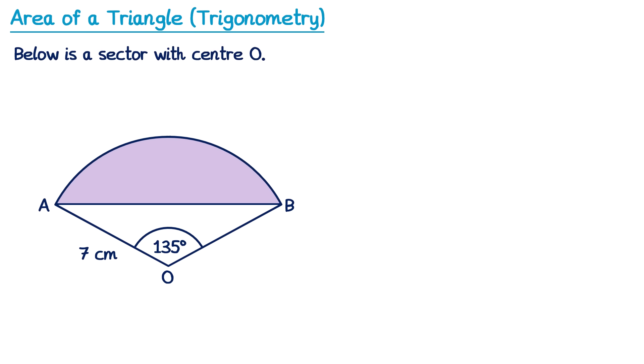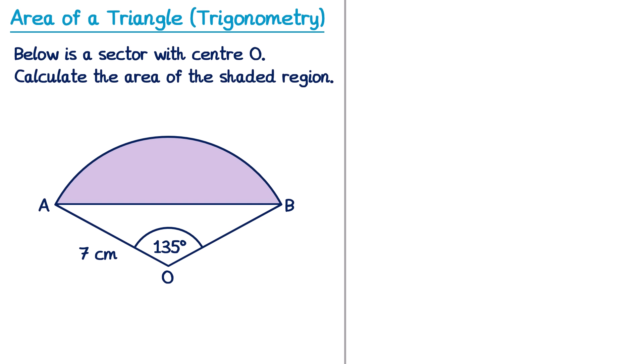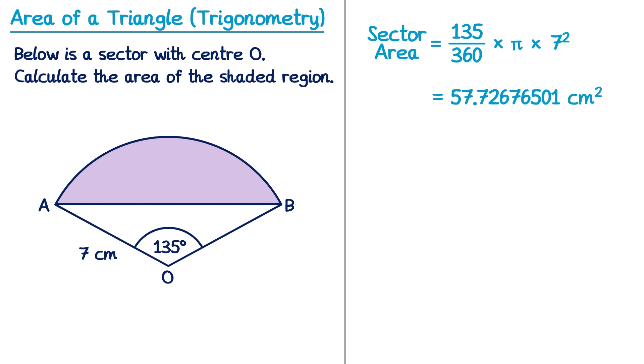As mentioned, this topic is often embedded in more complex questions. Here we have a sector of a circle with centre O and we've been asked to calculate the area of the shaded region. We first calculate the area of the whole sector using the formula: theta divided by 360, multiplied by pi, multiplied by radius squared. The angle theta is 135° and the radius is 7, so we substitute those values in and type it into the calculator, giving the sector area.